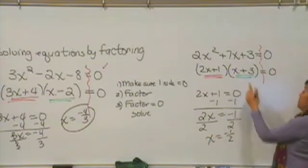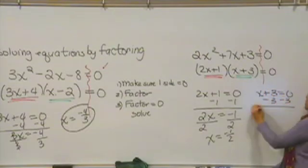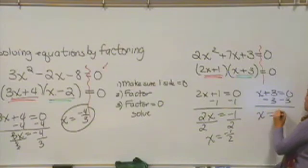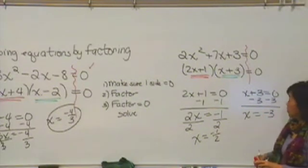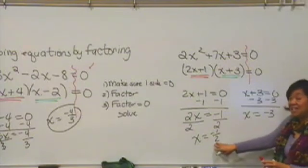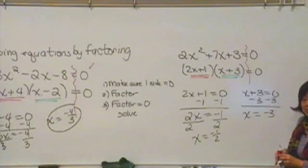For our green factor, if x plus 3 is equal to zero, I'll subtract 3 from both sides, and x is equal to negative 3. So this equation has two solutions. One answer is negative 1 half, and the other answer is negative 3. And that's how you solve an equation by factoring.